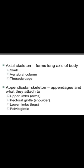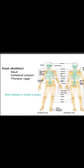The appendicular skeleton includes the appendages and what they attach to. Upper limbs are the arms, connected via the pectoral girdle, which we call the shoulder. Lower limbs are the legs, connected via the pelvic girdle. The diagram shows the axial skeleton highlighted in green.